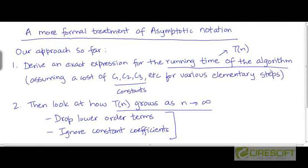We defined the running time as a function T. So this is a function of the input size n. And we derived an expression for T by assuming constant costs like c1, c2, c3, etc. for the various elementary steps in the pseudocode.